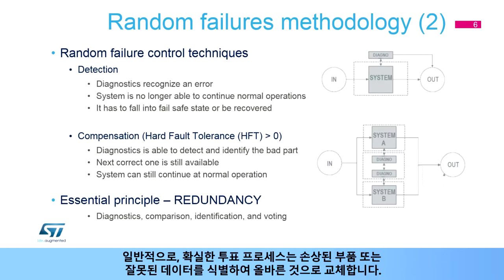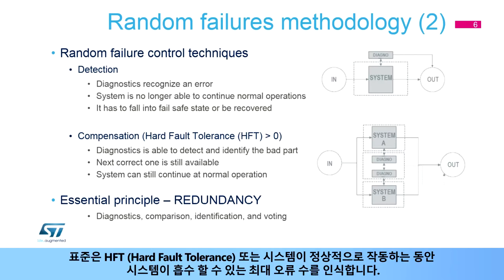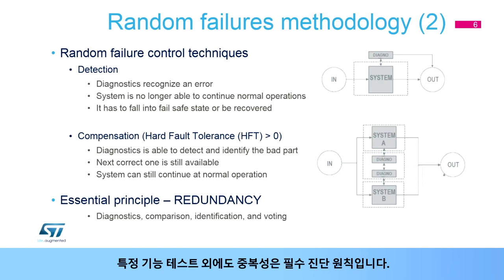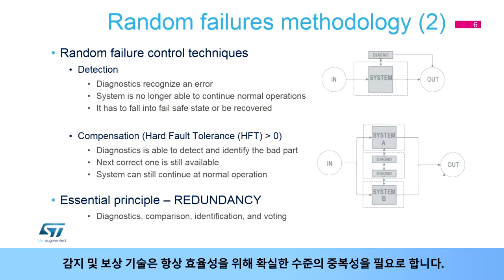Generally, a voting process is used to identify the damaged part or incorrect data, which is then replaced by the correct one. Standards recognize hard fault tolerance, or the maximum number of errors which a system can absorb while it can still continue at normal operation. In addition to specific functional testing, redundancy is the essential diagnostic principle here. Both detection and compensation techniques always require a sure level of redundancy to be efficient.